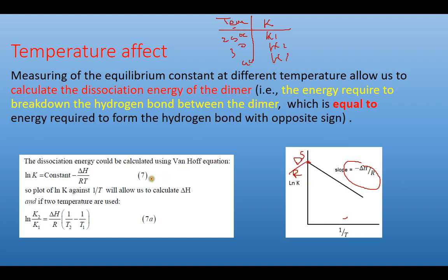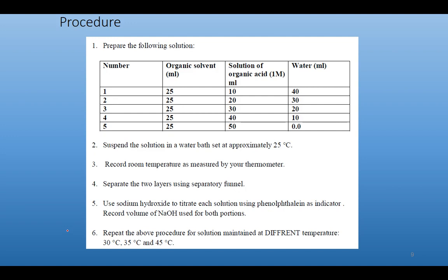If we have only two data points, we can use: ln(K2/K1) = (ΔH/R)·(1/T1 - 1/T2), where T must be in Kelvin. The experimental procedure: prepare five tests with 25 mL organic solvent and 40 mL water, adding 10, 20, 30, 40, or 50 mL of 1 M organic acid (acetic or benzoic acid) using M1V1 = M2V2. We also repeat the experiment at different temperatures to obtain K values at each temperature for the van't Hoff analysis.